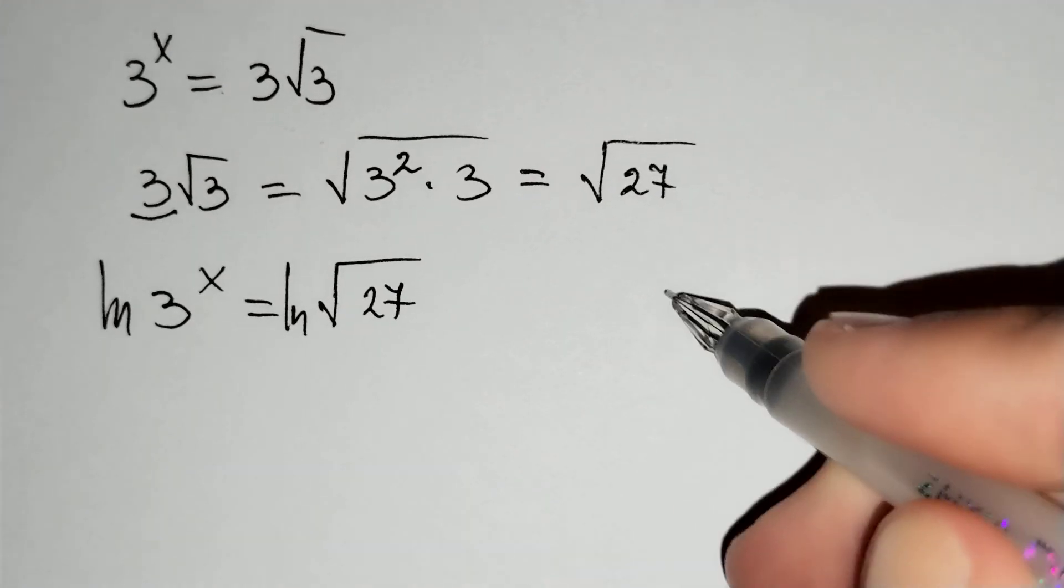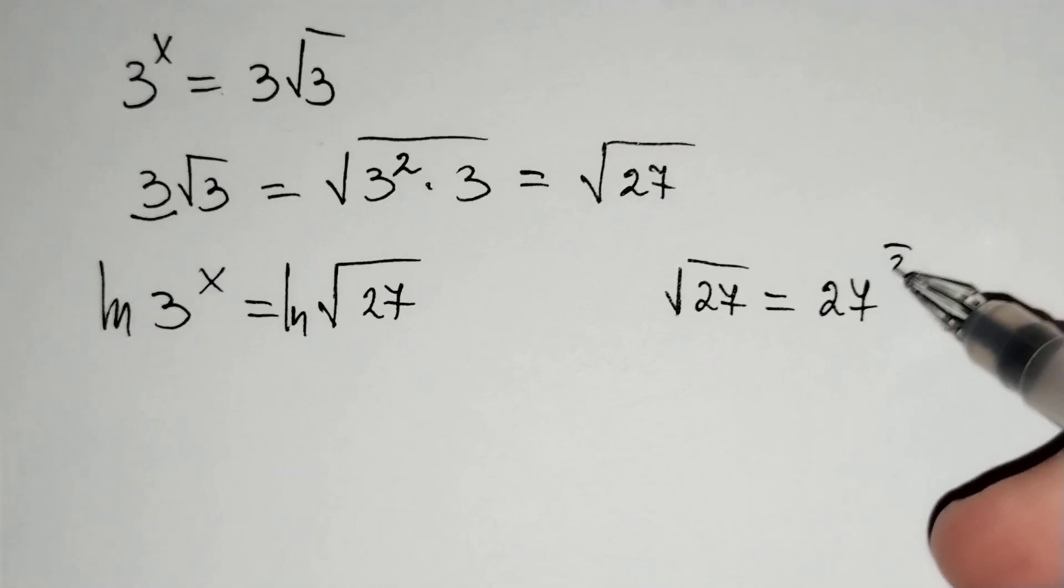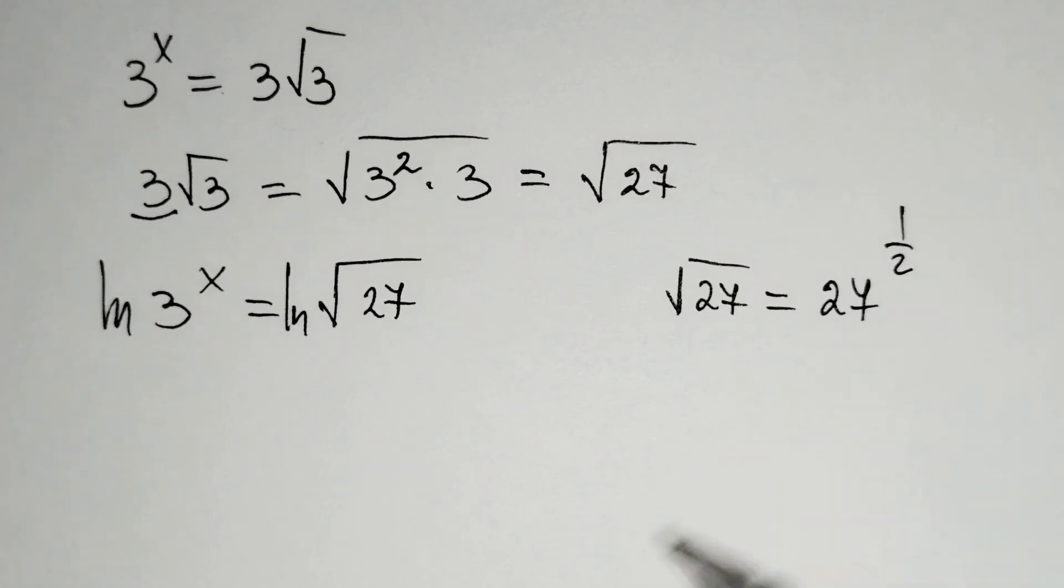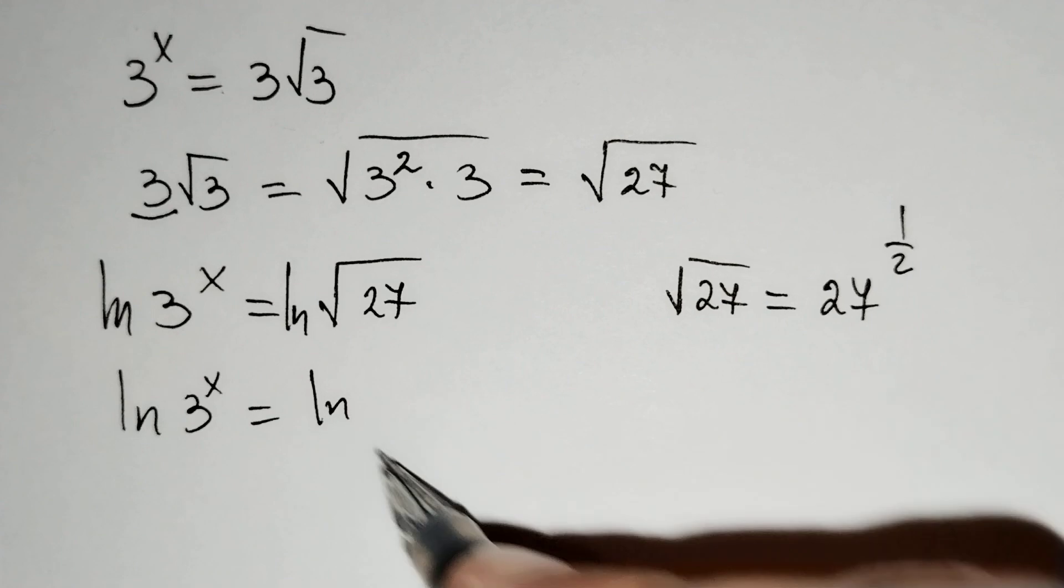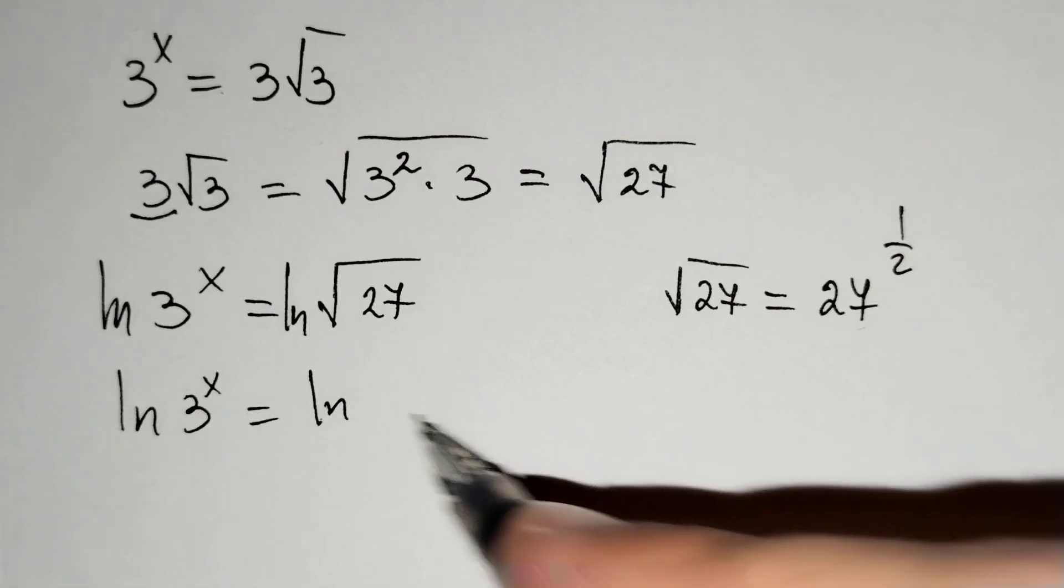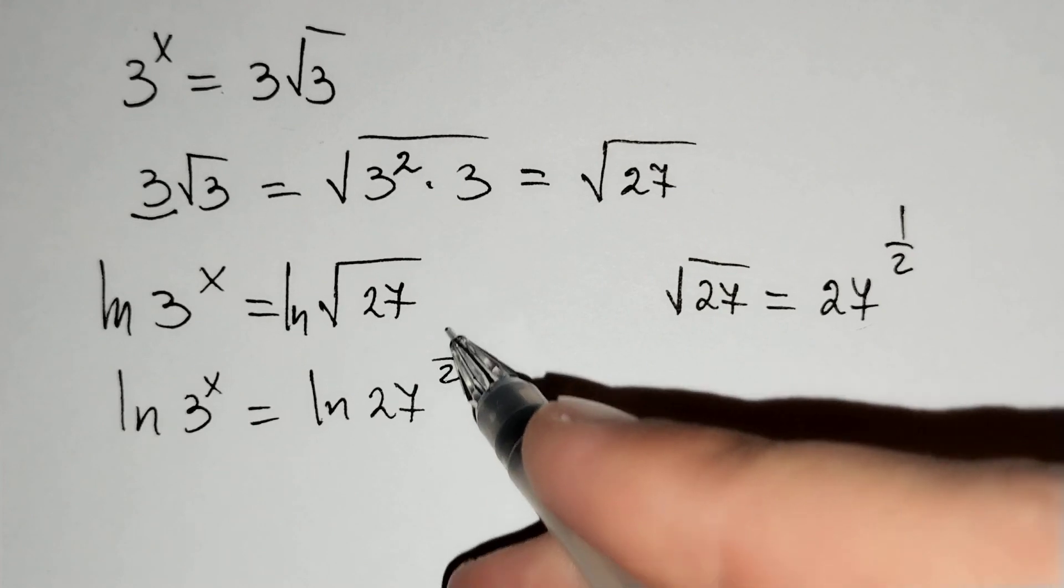The square root of 27 equals 27 power 1/2, so ln(3^x) equals ln(27^(1/2)).